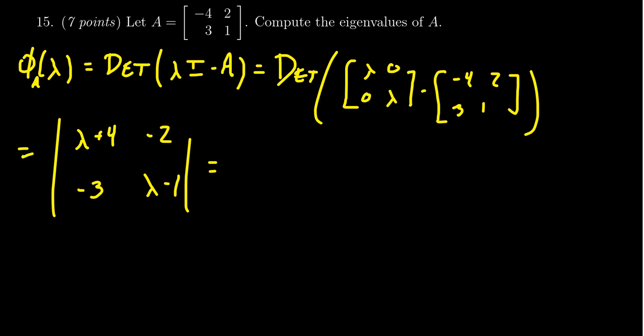We're going to get (λ + 4)(λ - 1) minus (-2)(-3), for which we're going to have to multiply this thing out to factor it. So FOIL out (λ + 4) and (λ - 1): we're going to get λ² - λ + 4λ - 4, and then negative one times negative two times negative three, that's going to be negative 6.